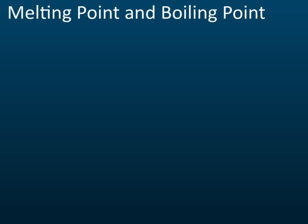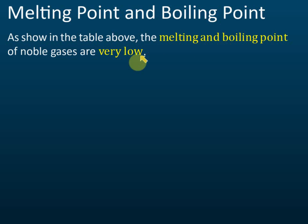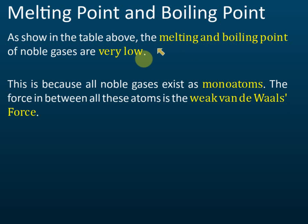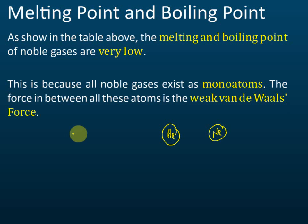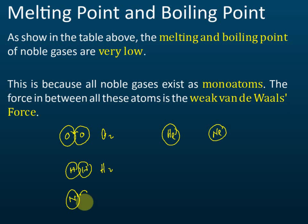The melting points and boiling points of noble gases are very low because they exist as monoatomic particles — each particle is just one atom. For example, helium is just He, and neon is just Ne. Unlike oxygen or hydrogen, which are diatomic molecules written as O₂ and H₂, noble gases are monoatomic gases where each particle is a single atom.